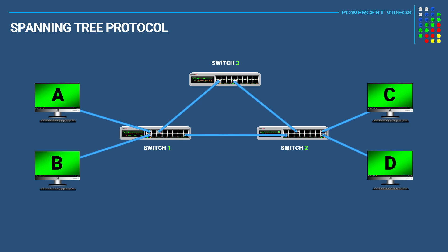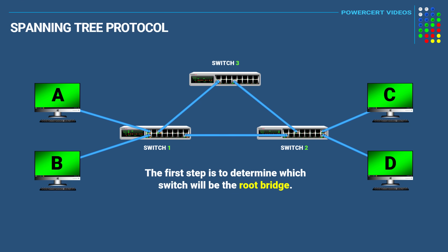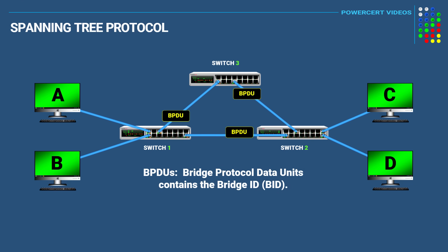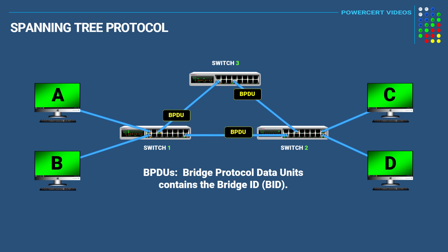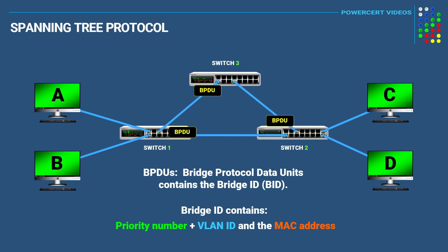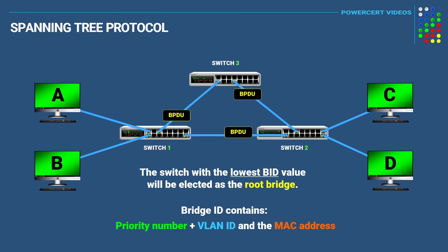The first thing that STP does is determine which switch will be the root bridge. The root bridge will be considered the most important switch, and the way it determines this is by having all the switches talk to each other. They do this by sending out messages called BPDUs, or Bridge Protocol Data Units, which contain information called the BID, or Bridge ID. STP uses the Bridge ID to determine which switch will be the root bridge, and the switch with the lowest Bridge ID value will be elected as the root bridge.